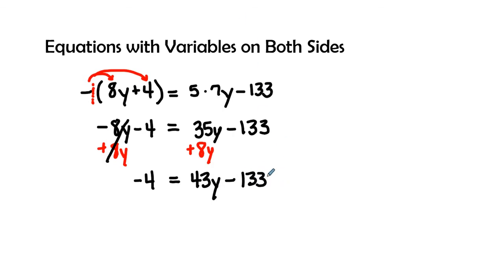Now I'm going to take this negative 133 and add a positive 133 to both sides. That's its inverse operation. And I'm going to come up with an answer of 129 equals 43y.